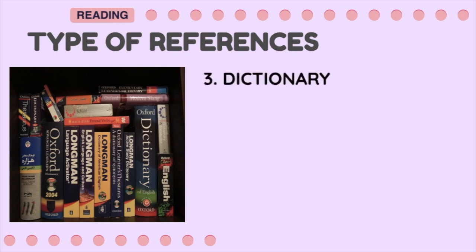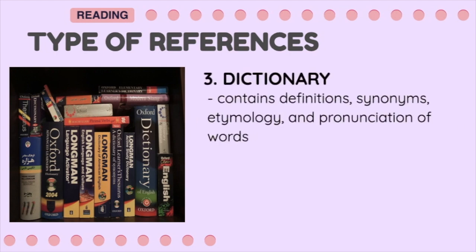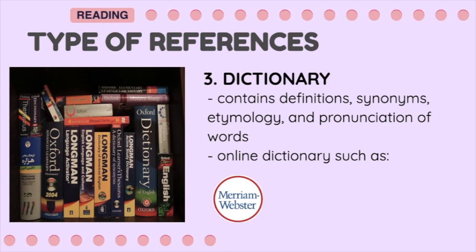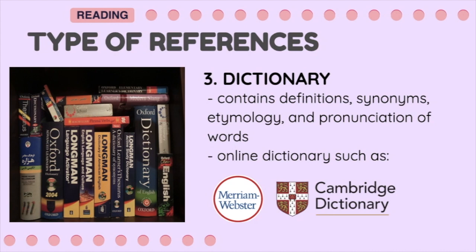The third type of reference is the Dictionary. It contains definitions, synonyms, etymology, and pronunciation of words. An online dictionary is also available, such as Merriam-Webster, which is made up of a typical dictionary, a thesaurus, a Spanish-to-English translation, and a medical dictionary. Cambridge Dictionary is a big website for those looking for a more serious online dictionary. Dictionary.com offers definitions, pronunciations, word origins, word history, and a lot more.